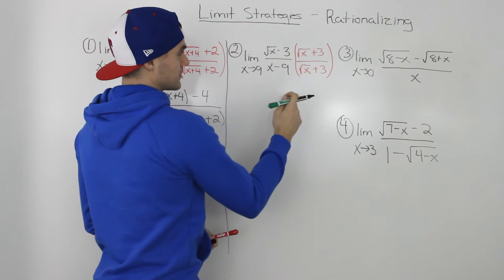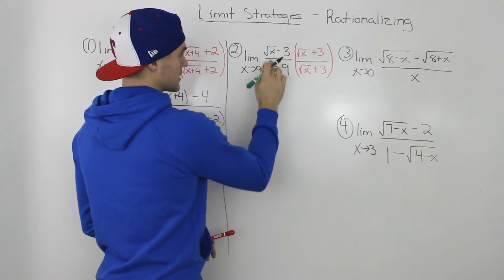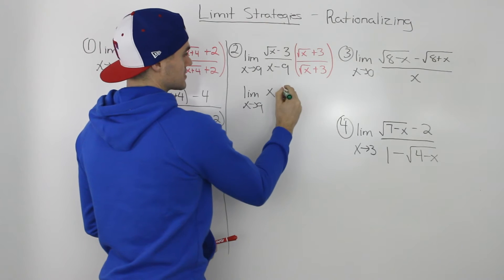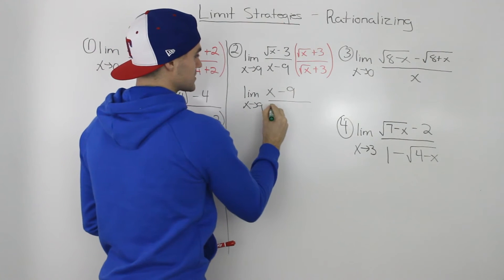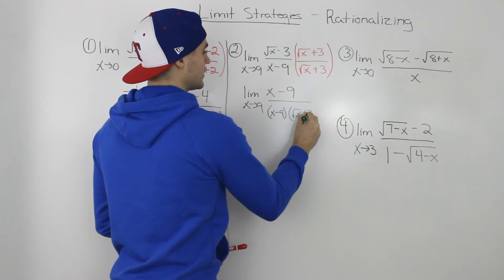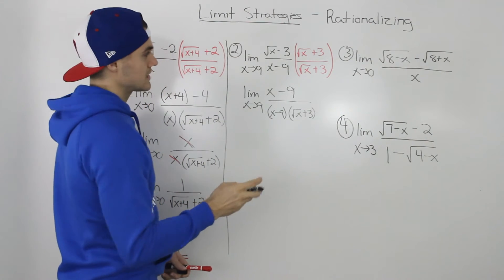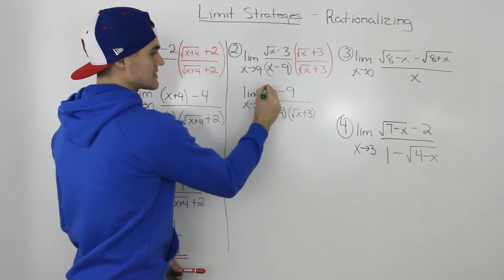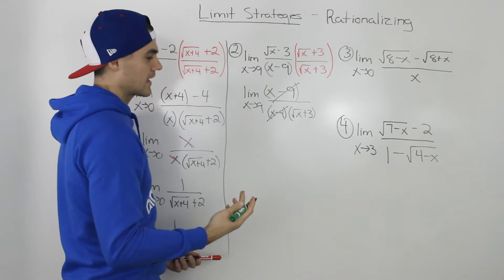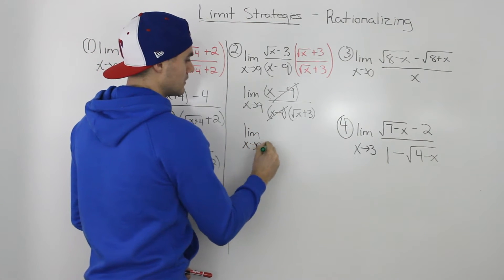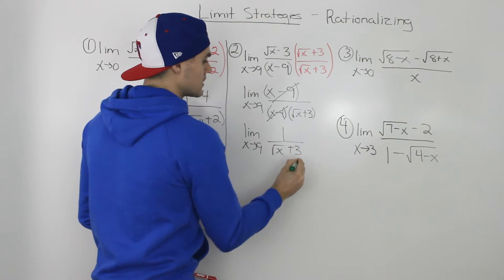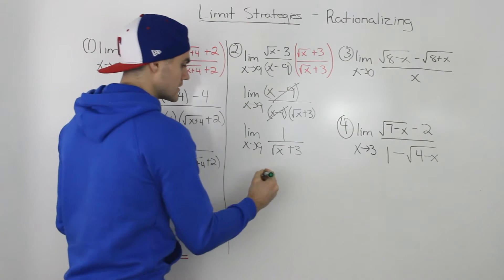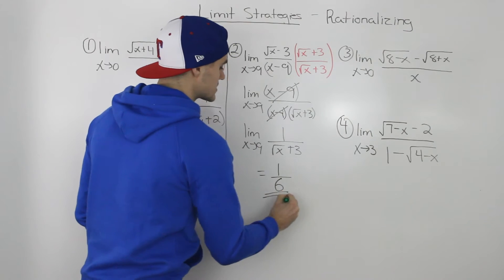When multiplying the numerator, the square root of x times the square root of x is x, and negative 3 times positive 3 is negative 9. Keep the two denominator terms separate: x minus 9 and the square root of x plus 3. A common mistake is to FOIL those denominators — don't do that. Keep them separate because the x minus 9 terms cancel out, leaving the limit as x goes to 9 of 1 over the square root of x plus 3. Substituting 9: the square root of 9 is 3, plus 3 is 6. So the answer is 1 over 6.